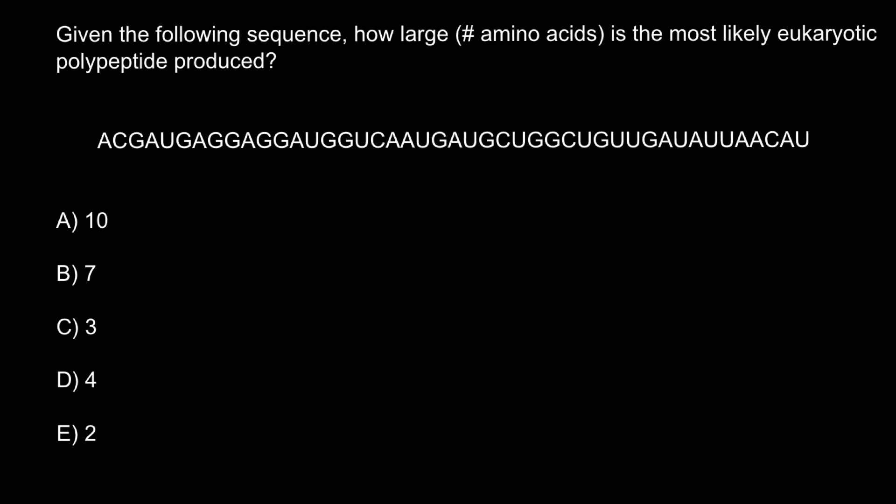Hi, today's question is, given the following sequence, how large number of amino acids is the most likely eukaryotic polypeptide produced? Here is the sequence of the message RNA, and here is the 5 answers to choose from.